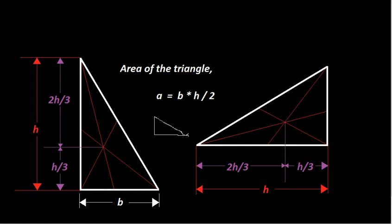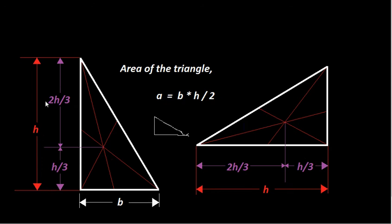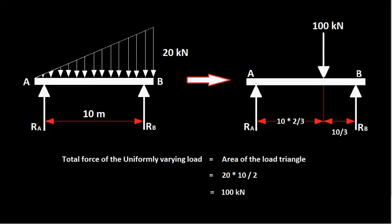Back to the original problem. The total load equals the area of the triangle, which is half × B × H. Here the base is 20 and the height is 10, so the area is (20 × 10) / 2 = 100 kN. That is the total load of this force system, acting at the center of gravity which is 10/3 from point B and 2×10/3 from point A.